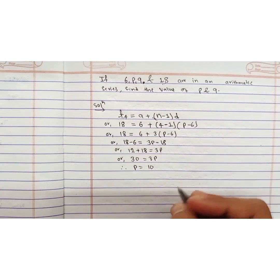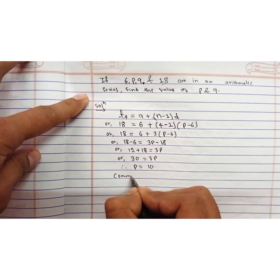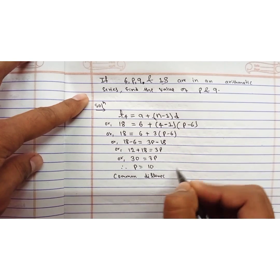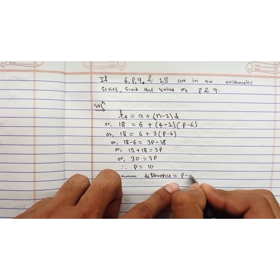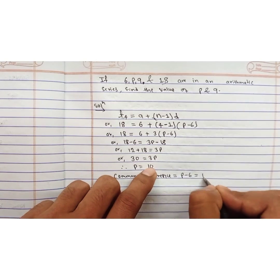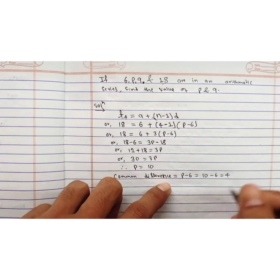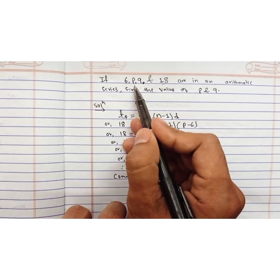The common difference is 4. And p is the second term and q is the third term.